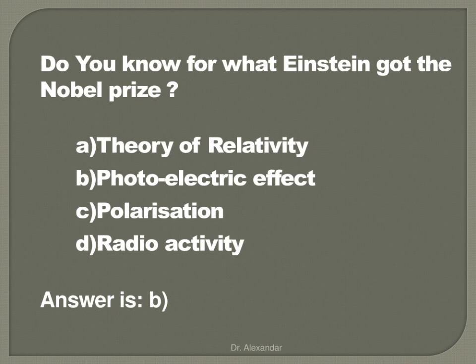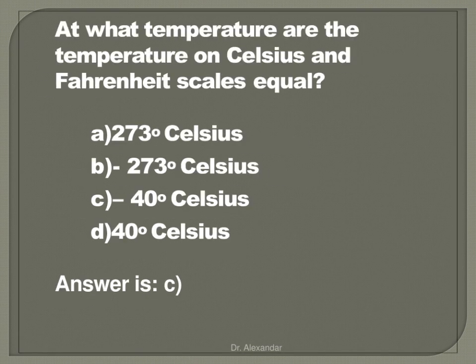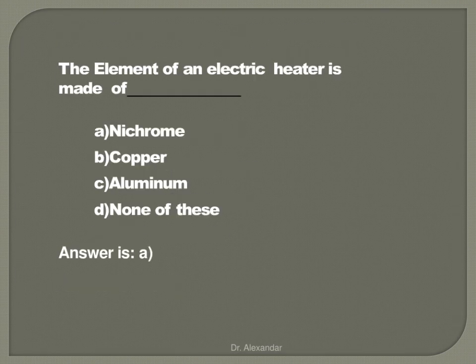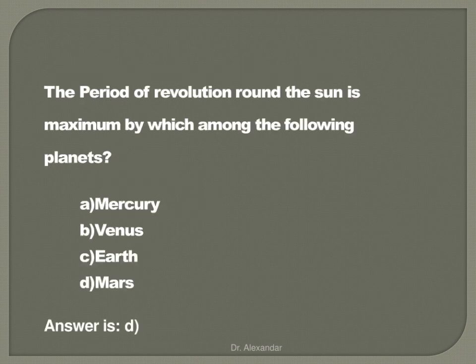Do you know for what Einstein got the Nobel Prize? It is not for the theory of relativity, but it is for the photoelectric effect. Which temperature is the same in both Celsius as well as Fahrenheit? The answer is minus 40 degrees Celsius. The element used in the electric heater is nichrome.